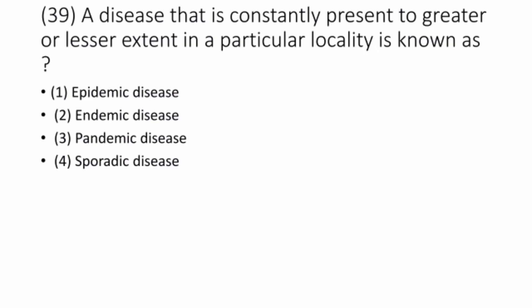Question 39. A disease that is constantly present to a greater or lesser extent in a particular locality is known as endemic disease. The correct option is option 2: endemic disease.